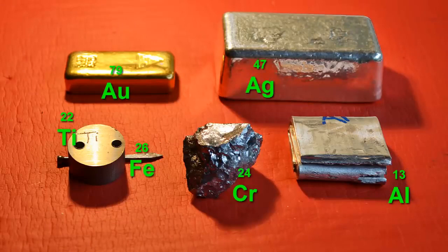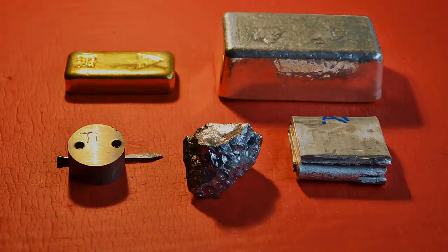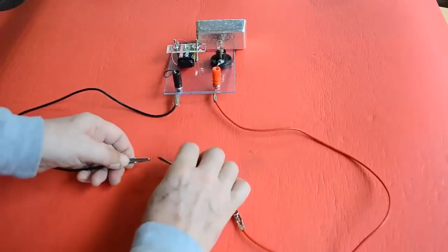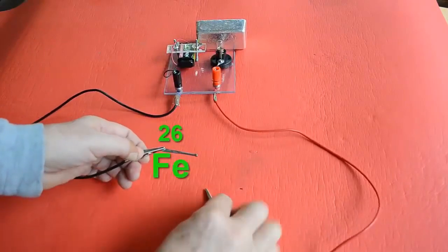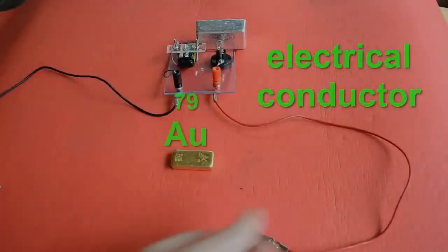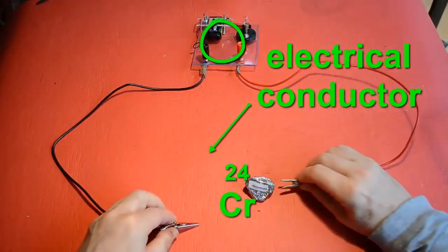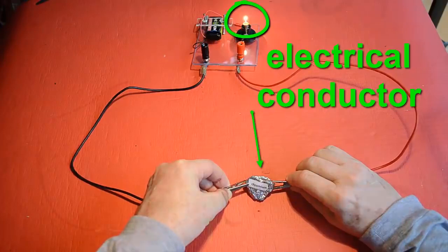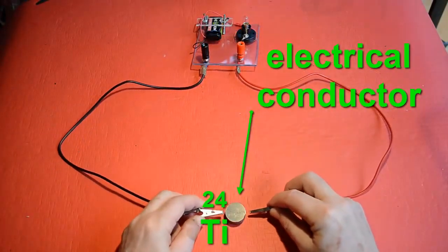Have you noticed that these metals are shiny and solid? They all are. Well, except for liquid mercury. Metals also conduct electricity and heat. Here, the different metals are connected to an electrical circuit. If the bulb lights up, it means that the thing is an electrical conductor. They all are.